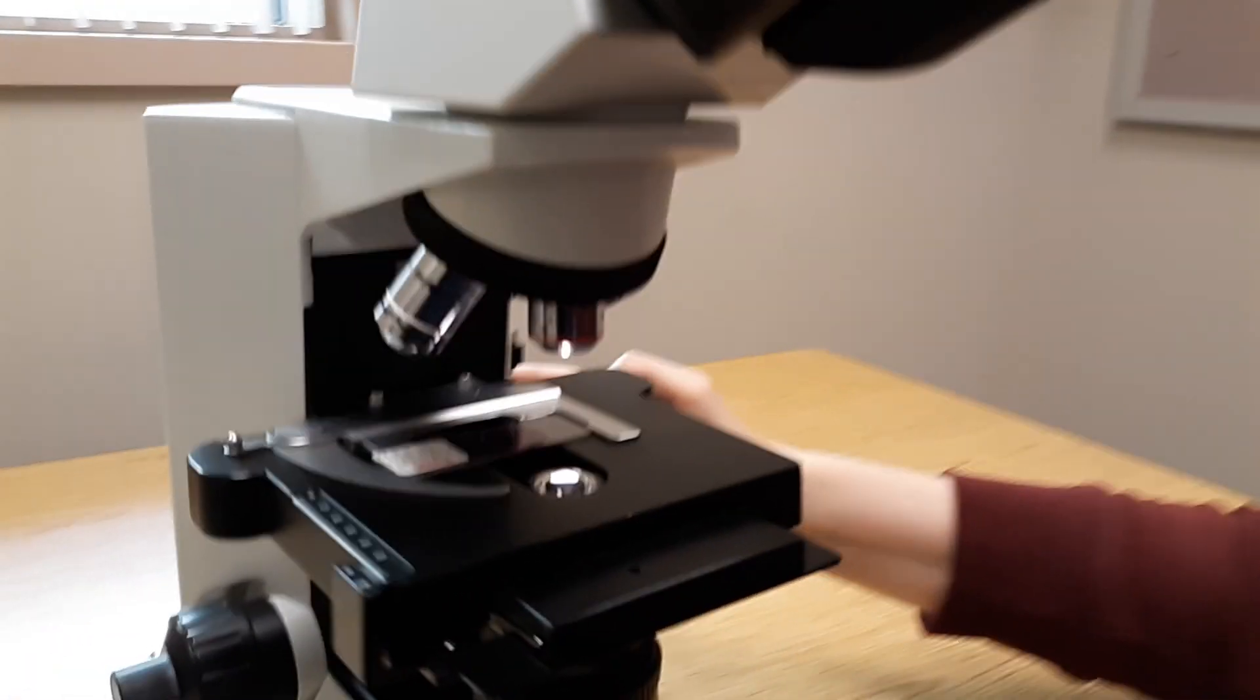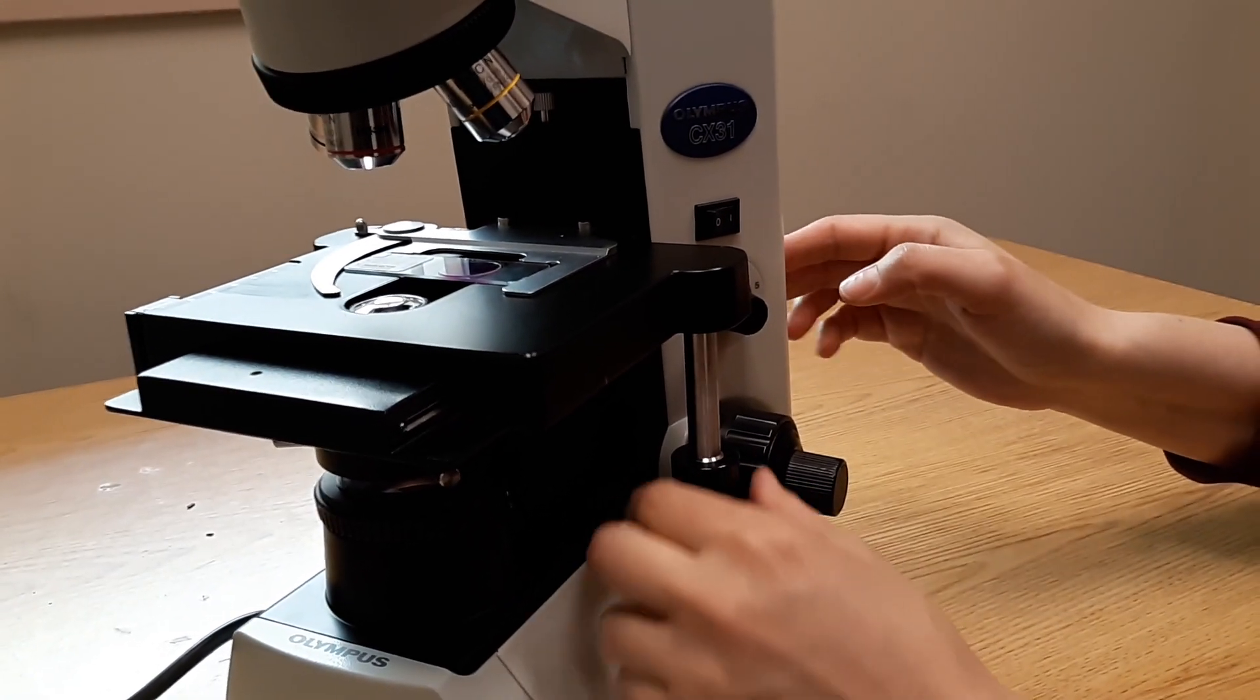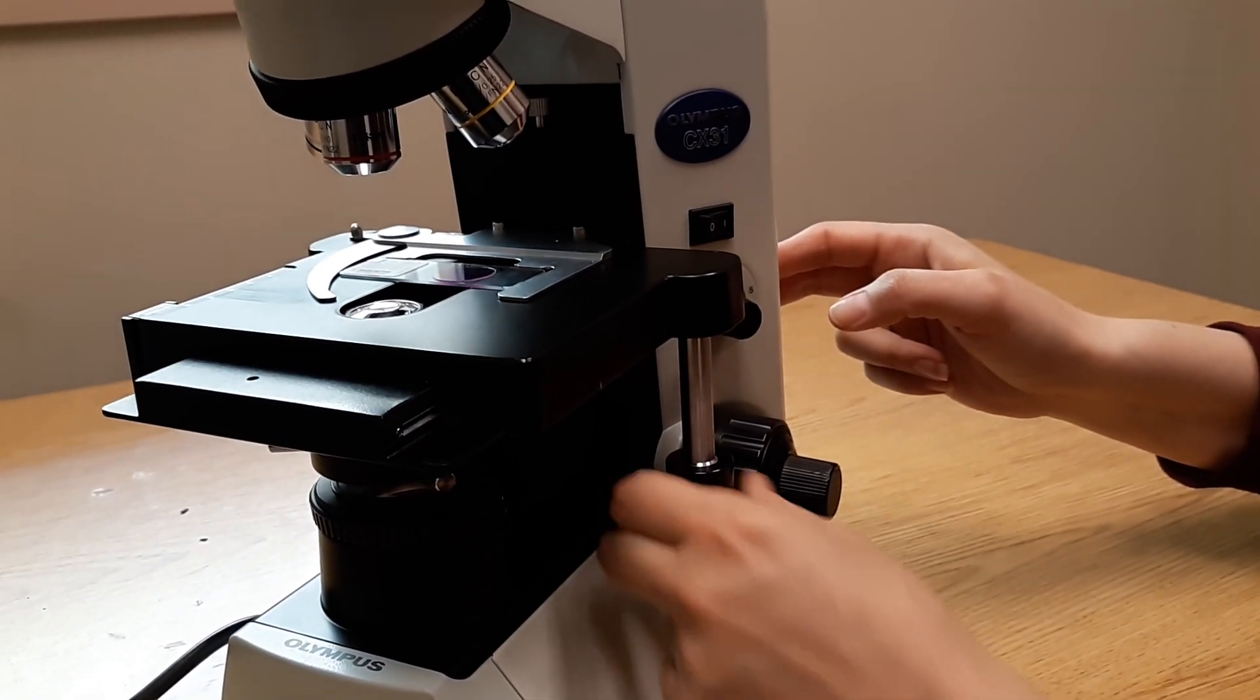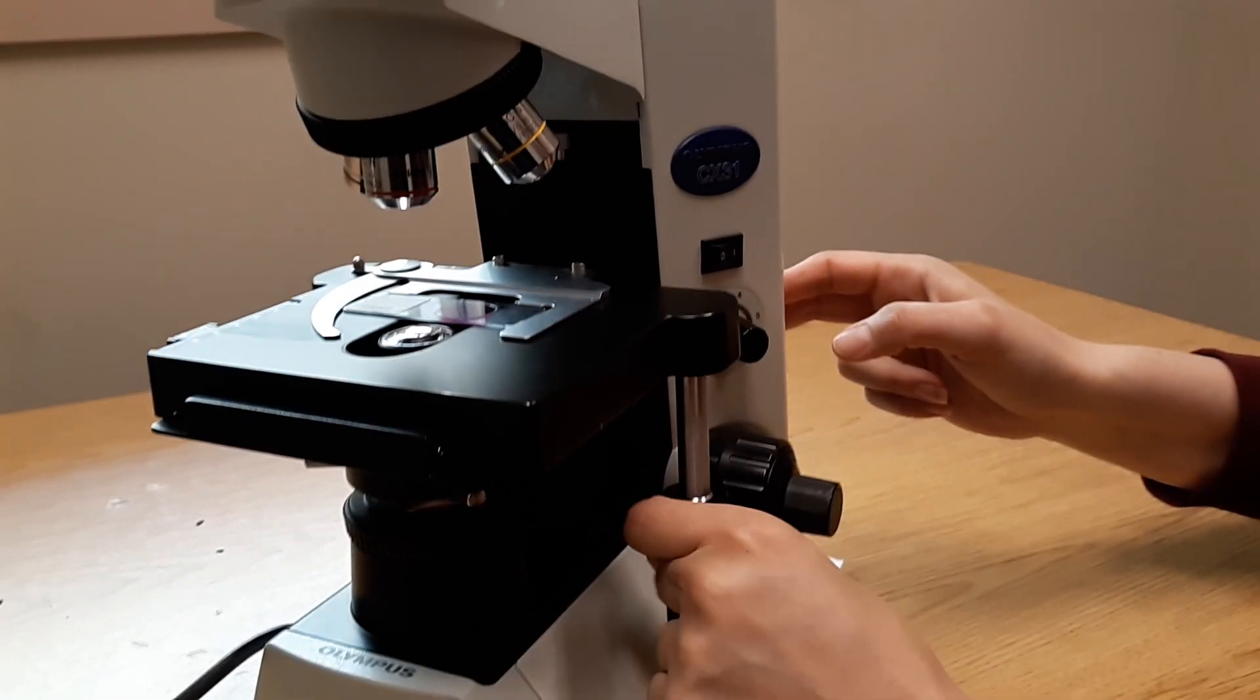On the side of the microscope, I'm going to rotate it for you. You're going to have these two knobs. The top one moves it forward and back, while the bottom one moves it left and right.